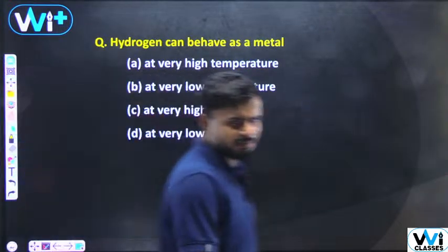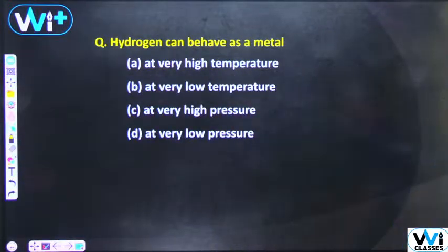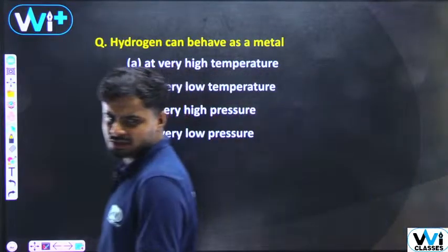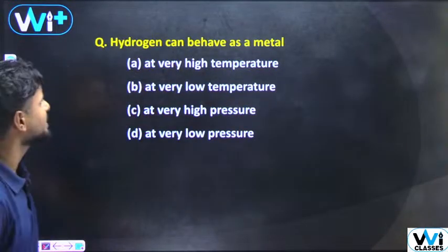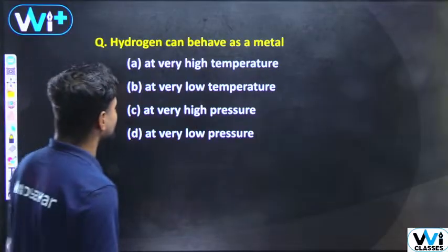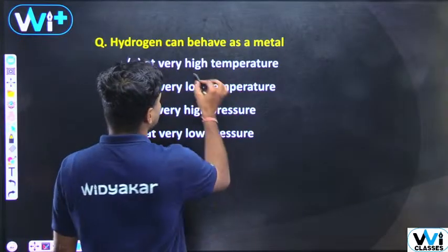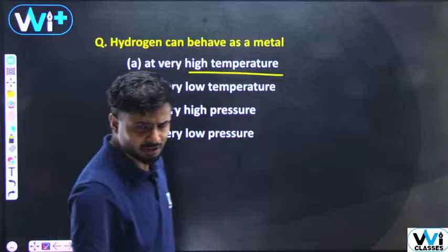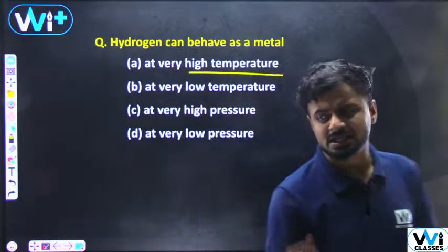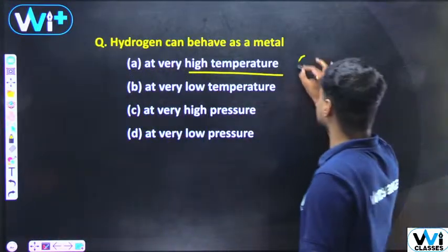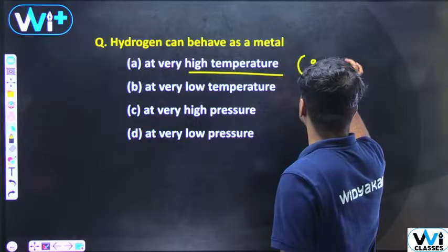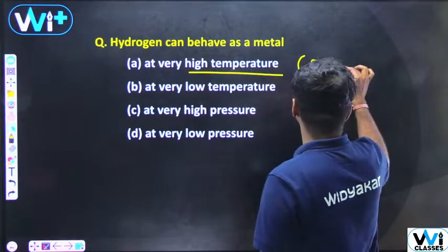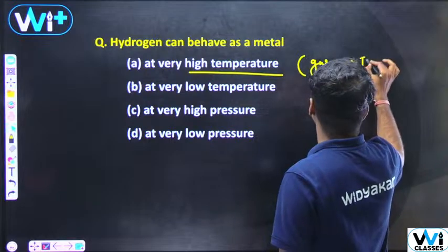Hydrogen behaves as a metal — hydrogen can behave as a metal. Hydrogen will behave as a plasma; it will behave as gas just like plasma at high temperature. High temperature gives the plasma state. Gas goes directly to the plasma state.